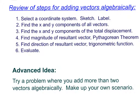Here's a quick review of the steps for adding vectors algebraically: first, select your coordinate system, sketch the problem, label everything, and write down knowns and unknowns. Second, find the x and y components of all vectors. Third, find the total x and y displacement by adding components. Fourth, find the magnitude using the Pythagorean theorem. Fifth, find direction using the tangent function. Finally, evaluate whether your answer makes sense. Try practicing with more than two vectors!